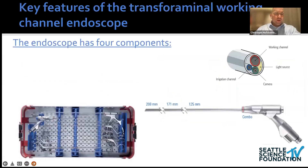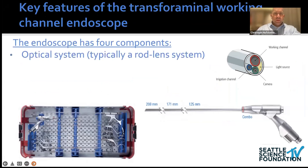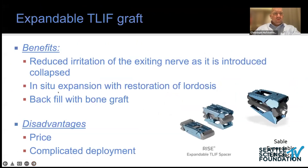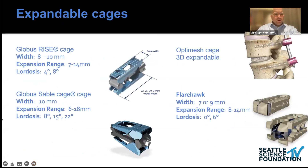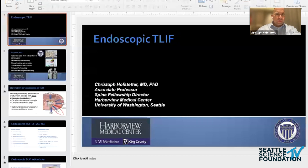Here's a quick overview of an endoscope: four components — optical system, illumination, irrigation channel, and a working channel. Now the rise of expandable T-LIF cages is interesting — it reduces irritation of the exiting nerve root, allows in-situ expansion and restoration of lordosis, and you can backfill bone graft. The disadvantage is price, though there's movement to bring that down, and deployment is complicated. On the market we have two-dimensionally expandable cages from Globus, the Optimus cage, and the Flare Hawk — a three-dimensional option. The additive technology products on the right are interesting: you put a shell in and add more material, versus the left-side products which expand from one delivered package.